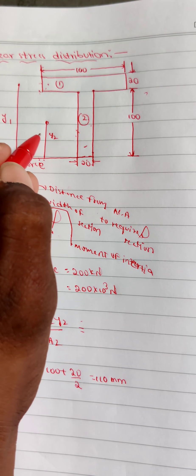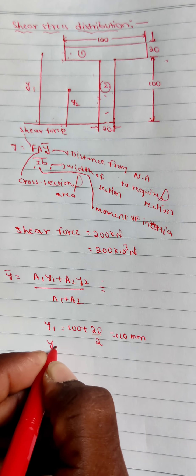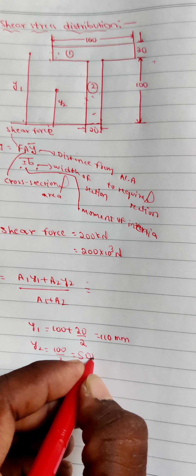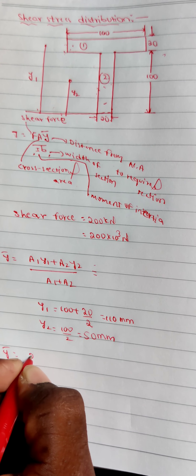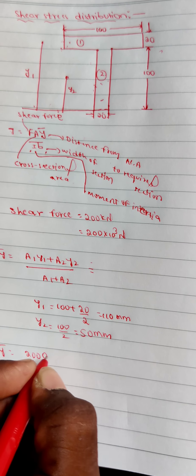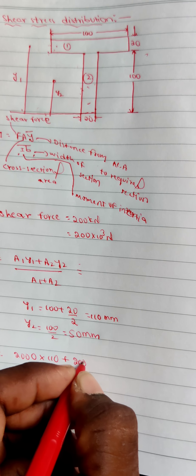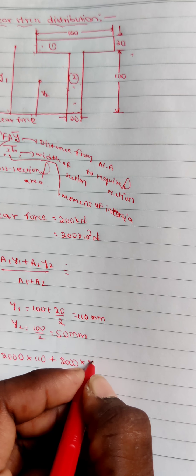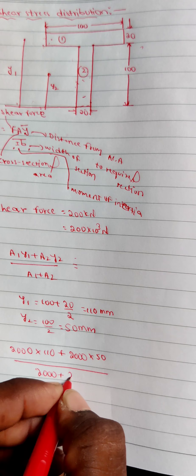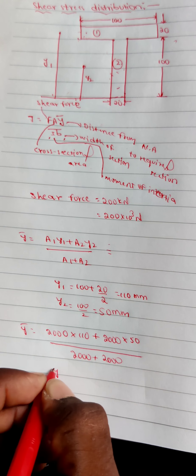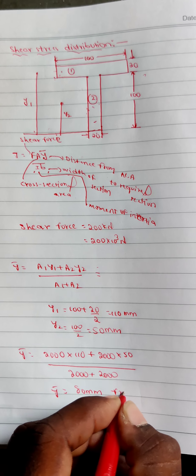Y2, the centroid of section 2 from the bottom, is 100 divided by 2, which is 50 mm. So Y-bar equals (100×20×110 + 100×20×50) divided by (2000 + 2000), giving A1·Y1 as 2000×110 and A2·Y2 as 2000×50. Therefore Y-bar is equal to 80 mm from the bottom.